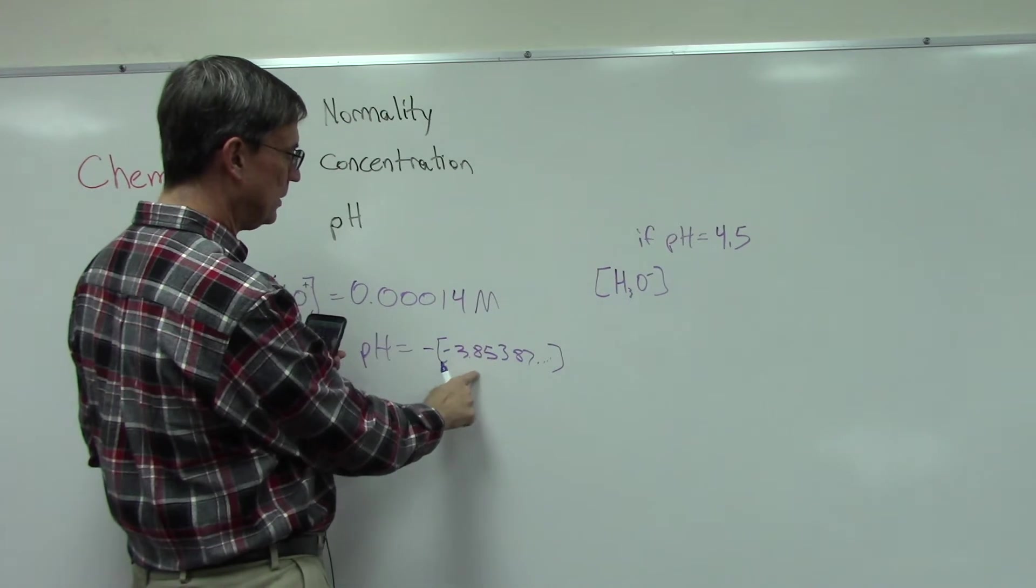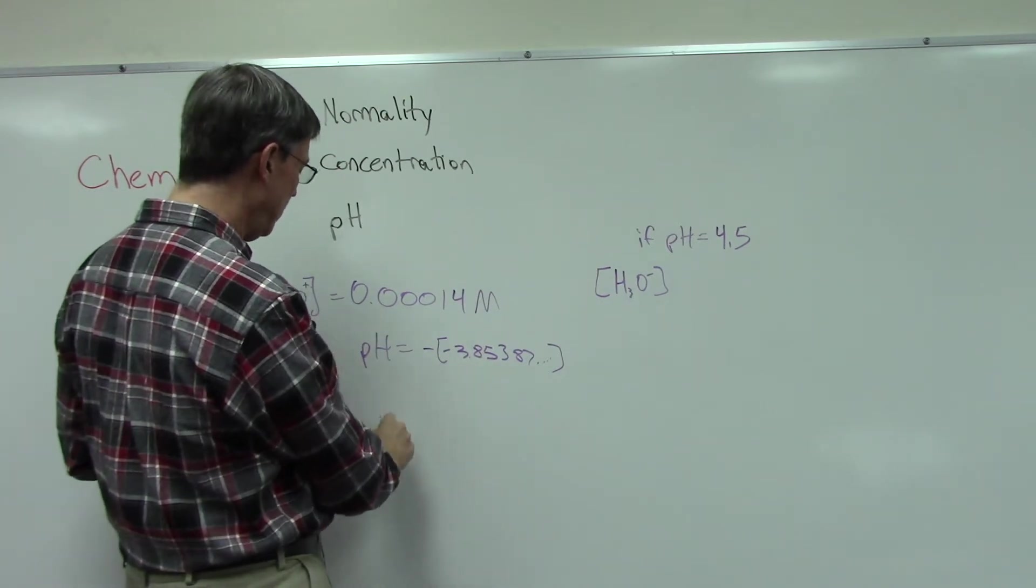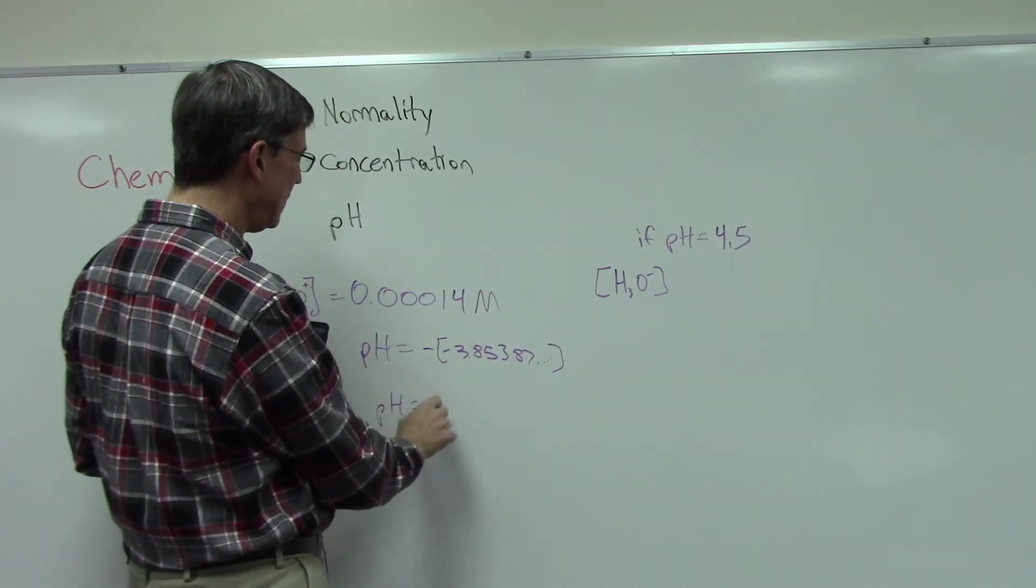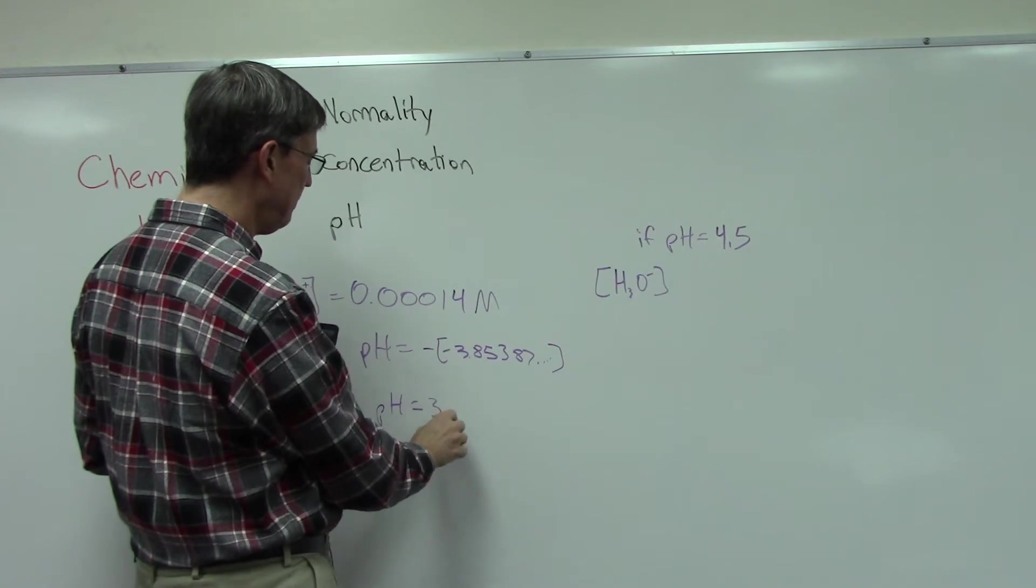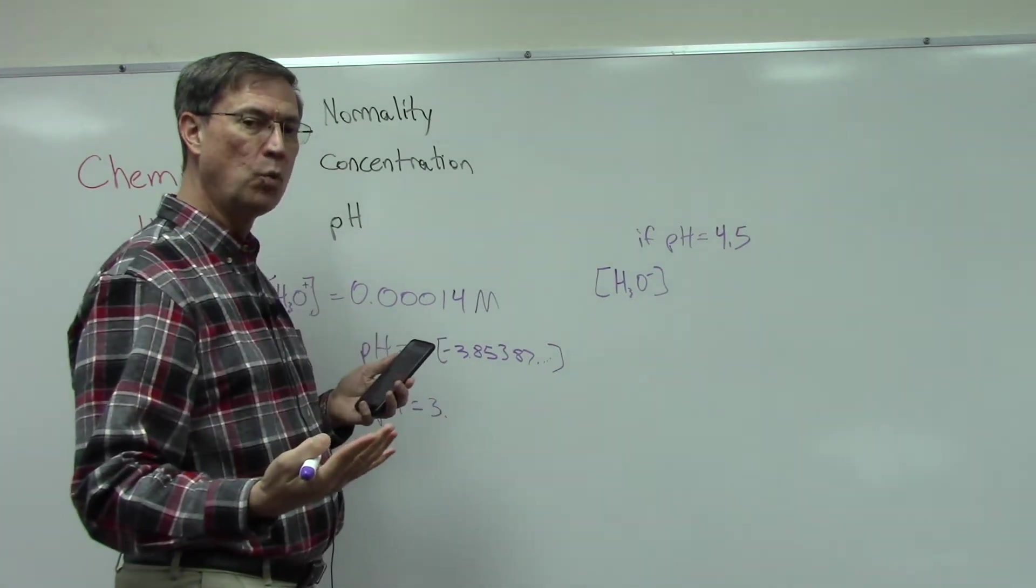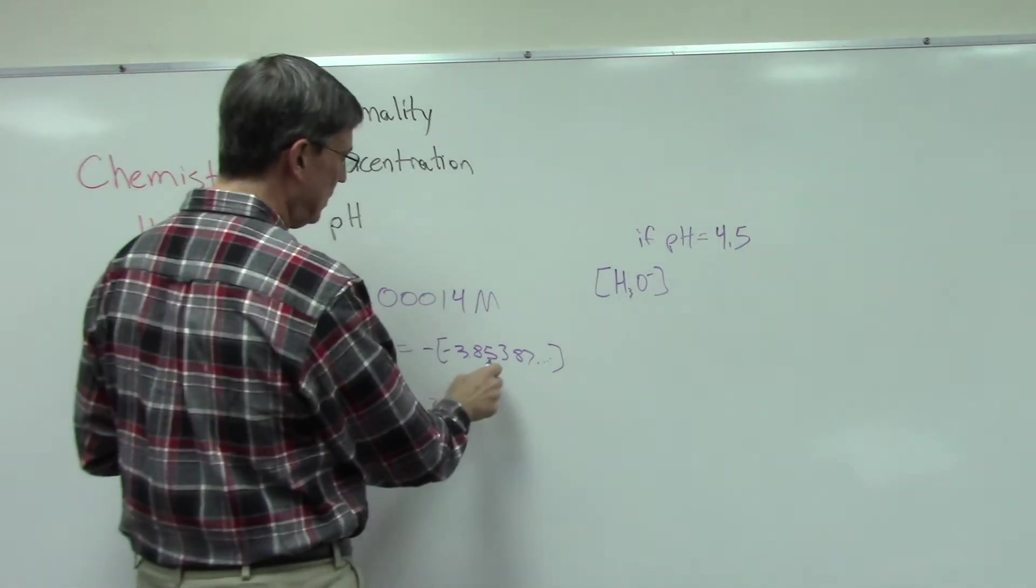This gives us a negative number, but we always write the pH as a positive, so we'll just write 3.9 - we always round it off to one decimal place, so the five means I'll round the eight up to nine.